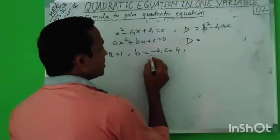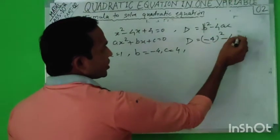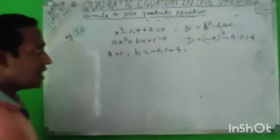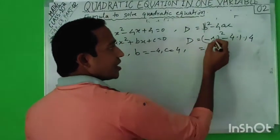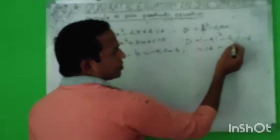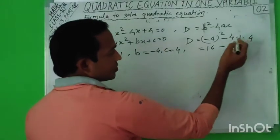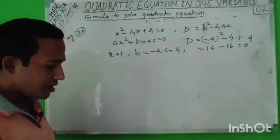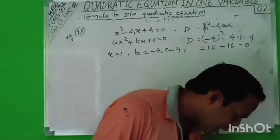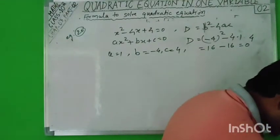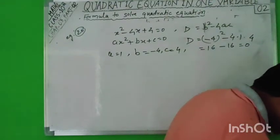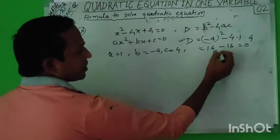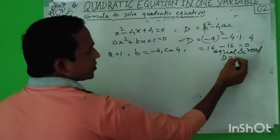Now find the discriminant: D = B² - 4AC = (-4)² - 4(1)(4) = 16 - 16 = 0. So D = 0. As we saw earlier, when D = 0, the roots are equal and real. Therefore the roots of this equation are equal and real. This is how you find the nature of roots for any given equation by computing the discriminant.